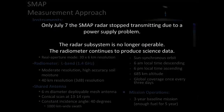As many of you now know, on July 7th, the SMAP radar stopped transmitting due to a power supply problem, and the radar subsystem is no longer operable. We are moving forward with the radiometer, which continues to perform above expectations. The science going forward will come from the radiometer, some historical radar data, and improvements using radiometer substitutions for the loss of the radar.